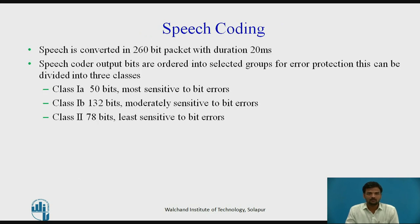In essence, data from previous data samples are used to predict the current data samples. Each data sample is then encoded as a sum of bits representing the coefficients of the linear combination of previous samples. An encoded form of the difference between the predicted and actual sample converts speech into a 60-bit packet with a duration of 20ms.